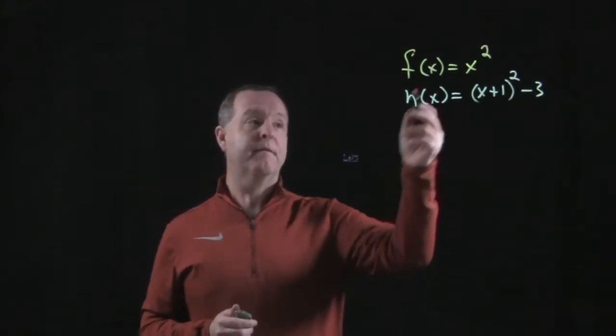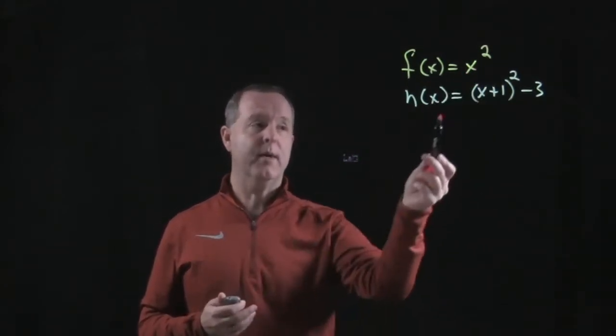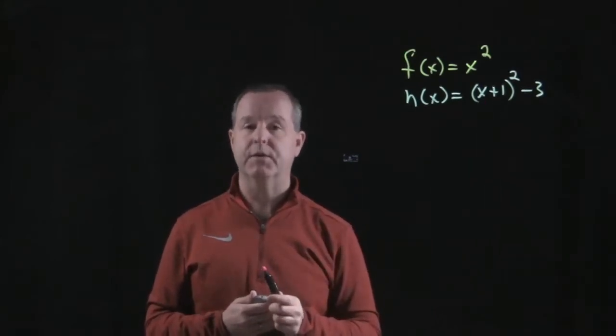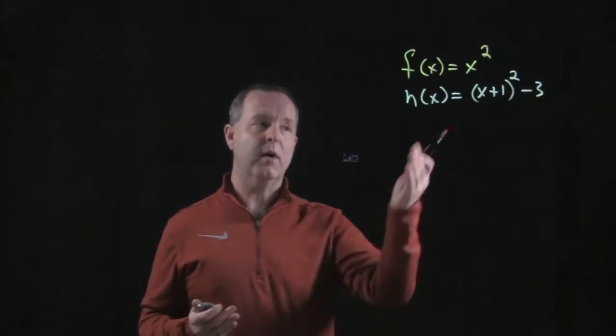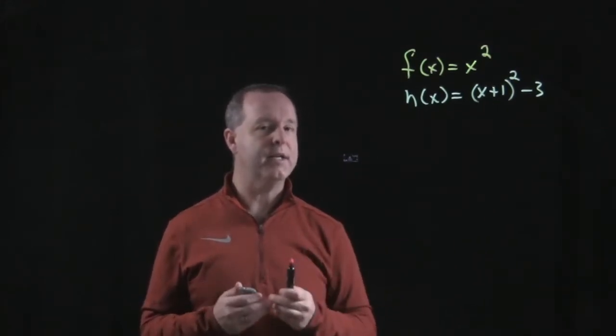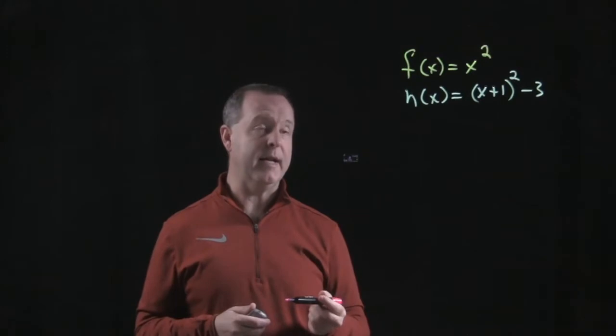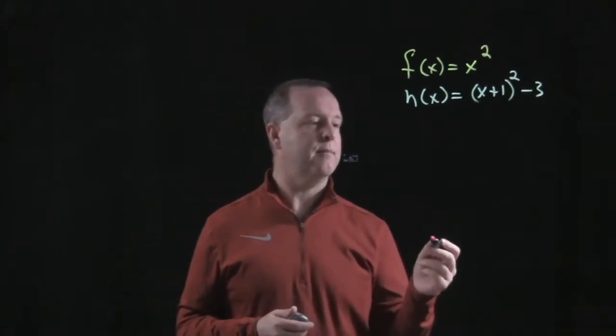So can we obtain from the function x squared, can we obtain (x+1)² - 3 in a relatively straightforward way? Well sure, because we're able to recognize that there's two kinds of shifts that are happening from the basic graph. So let's look at the basic graph.